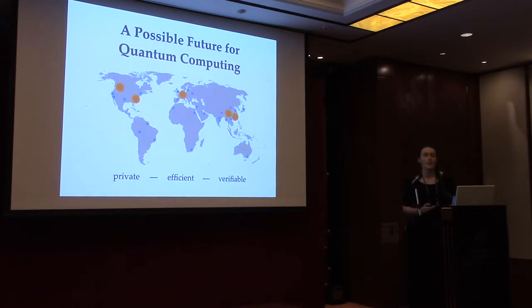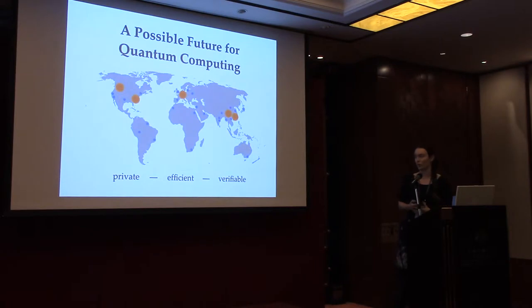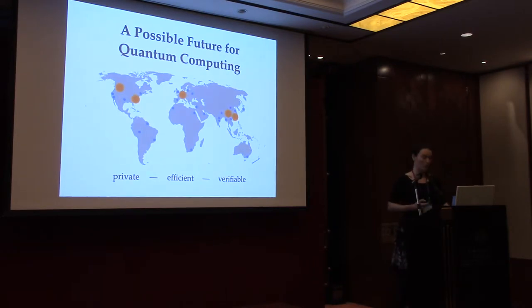You can already see where homomorphic encryption comes in. These clients will want to send their data to quantum computing centers to have computations performed, but they'll need guarantees. First, their data remains private — this is what homomorphic encryption gives you. Second, it should be reasonably efficient: clients don't want to do a lot of work themselves, either in time or in quantum resources — they might want to run things on a classical computer. Lastly, they want to verify that whatever they get back is actually the result of the computation they wanted. This is what I call verifiability, and this is the focus of this talk.